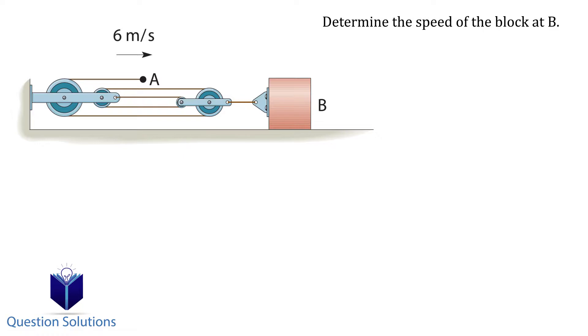We will establish the datum at the big pulley. Notice how there are two bars which are constant. Meaning when the cable is pulled, the lengths of those bars won't change.